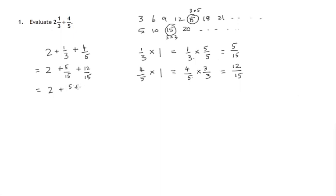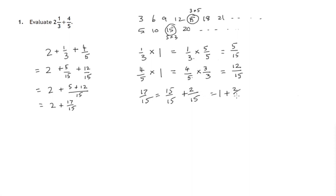This is five fifteenths, this is twelve fifteenths. And if we're adding them, we'll get five plus twelve lots of these fifteenths, which is seventeen fifteenths. Now for seventeen fifteenths, we know that fifteen fifteenths is actually one. That would leave another two of the fifteenths over. So we can rewrite seventeen fifteenths as one and two fifteenths. Two plus one is three and two fifteenths.